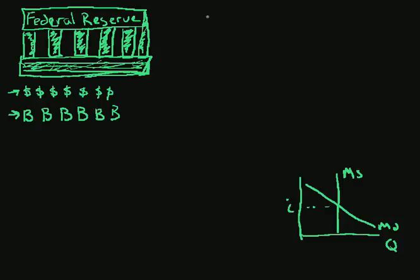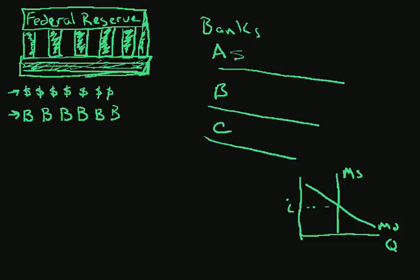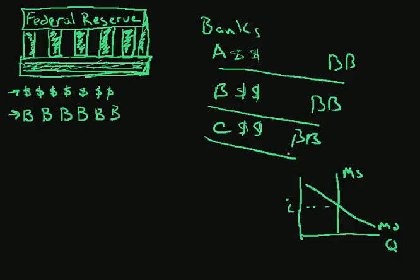How does it do that? Well, let's think of these banks over here — Bank A, Bank B, and Bank C. Now these banks also have dollars and bonds associated with their banks, so we can put some dollars and some bonds over here like this.